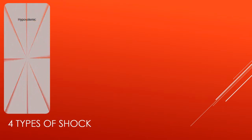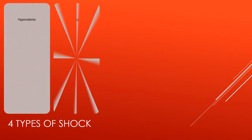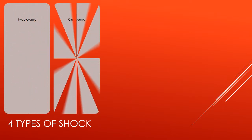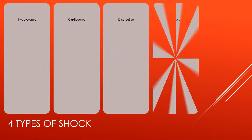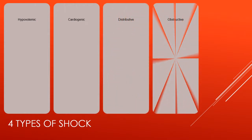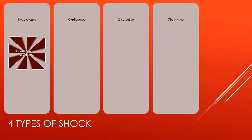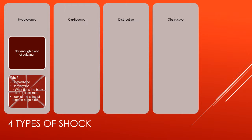The four types of shock are hypovolemic, cardiogenic, distributive, and obstructive. In hypovolemic shock, there is not enough blood circulating. We need to find out why — is it due to hemorrhage or dehydration? What does the body do? It increases heart rate. You want to look at the concept map on page 815.